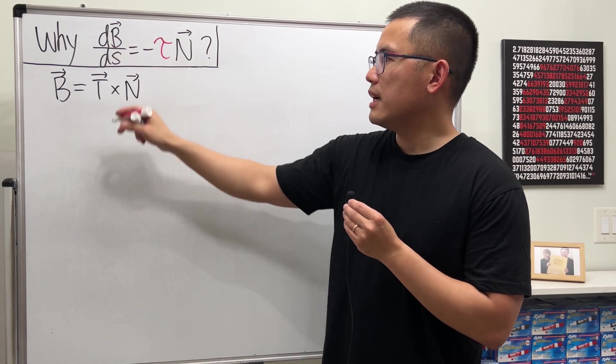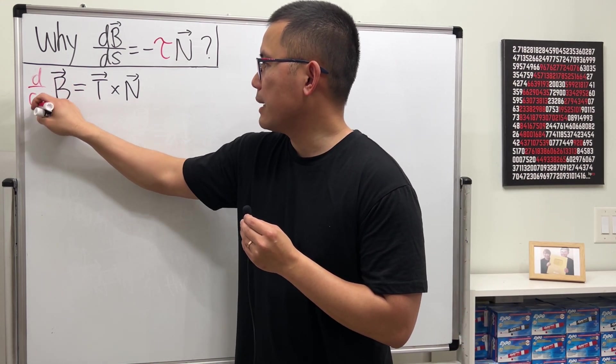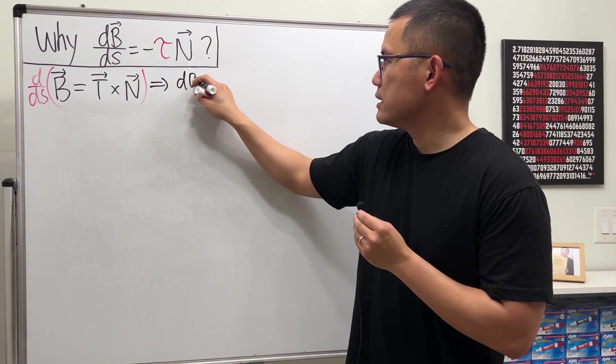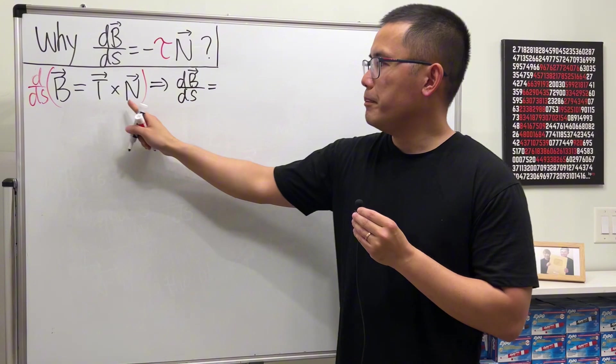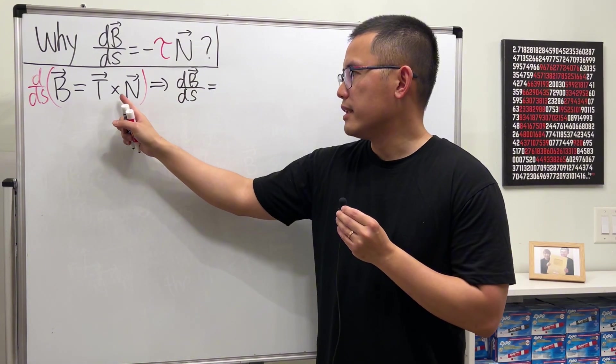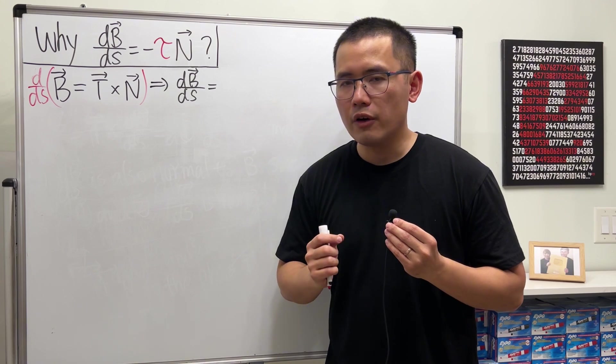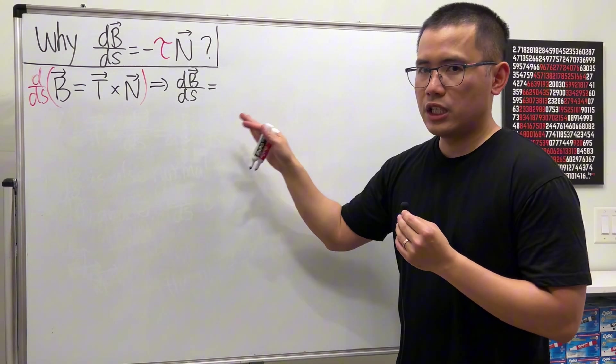And right here we have dB/ds, so we are just looking at this equation and take the derivative with respect to s. So on the left hand side, we get our dB/ds. And then for the right hand side, make sure we use the product rule for taking the derivative of this cross product. And keep in mind, the order of the cross product matters. So when we write it down, we also have to keep the same order.